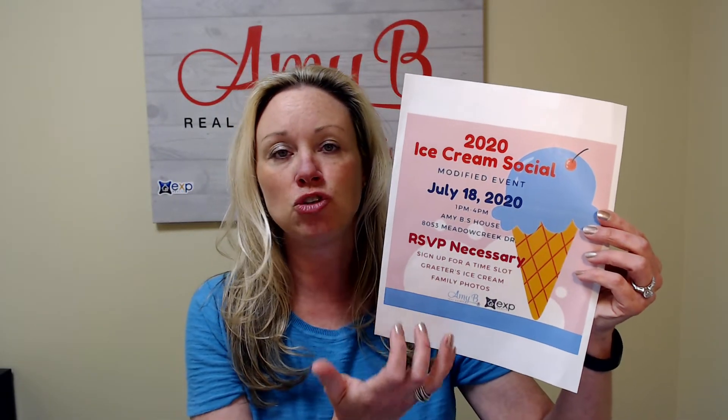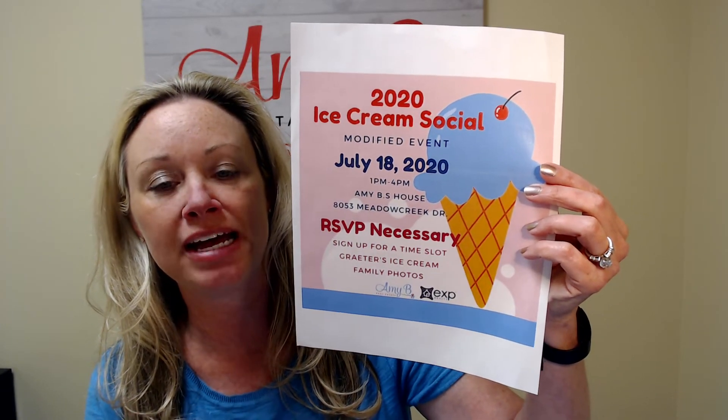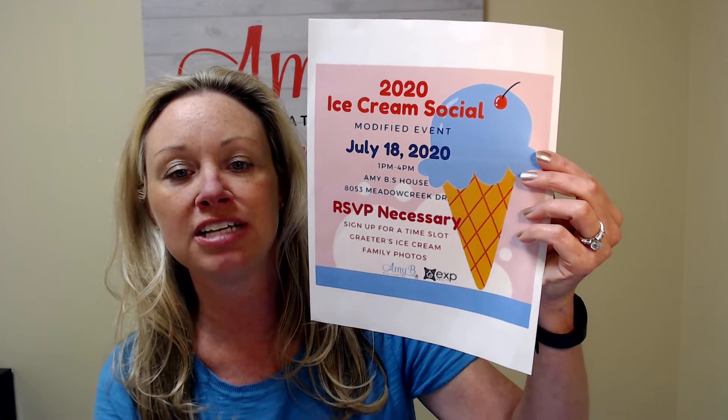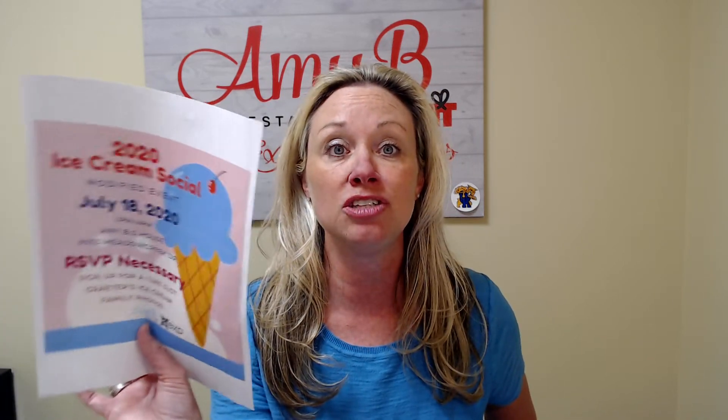Here is the invitation — just a square image created in Canva. I save it on my phone and text my clients: 'I'm still having my ice cream social, a modified version. Let me know if you can make it.' The image covers the date, that it's modified and at my house, that RSVP is necessary, sign-up for a time slot, Graeters ice cream, and family photos. It has my logo — not too busy since it's going to be small on a phone.